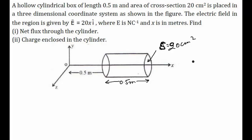Where E (electric field) is in units of Newton per Coulomb and x is in meters. We have to find the net flux through the cylinder and the charge enclosed in the cylinder. The expression of the electric field is E = 20x î.